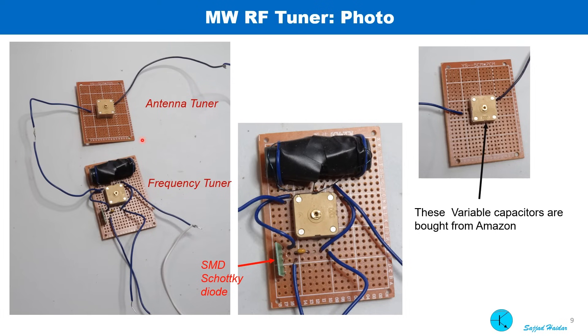Here is the practical circuit. The antenna tuner is on one board and the tuning circuit is on the other board. This is the ferrite coil, the variable capacitor and this is the Schottky diode. As it is a SMD device, I put it on a small circuit board. And this is the first filter capacitor.